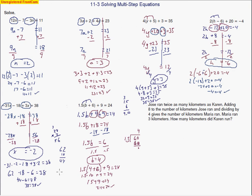The next problem is a word problem — a little difficult because it's got three unknowns. Jose ran twice as many kilometers as Karen. We don't know Jose's kilometers, so let's call it j. Jose's distance is 2 times Karen's amount. The problem also says: adding 8 to the number of kilometers Jose ran.